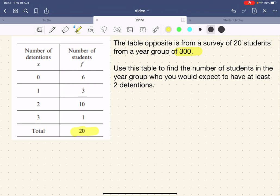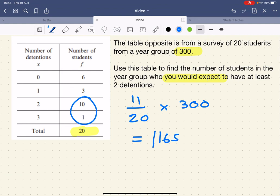Use this table to find how many students in the year group you would expect to have at least two detentions. First, let's work out the probability of two detentions, which is 11 out of the 20 altogether that will have at least two detentions. Remember, at least two means two or three. The year group is 300, so we multiply this by 300, and that gives me 165. So I would expect 165 of them to get two or more detentions.